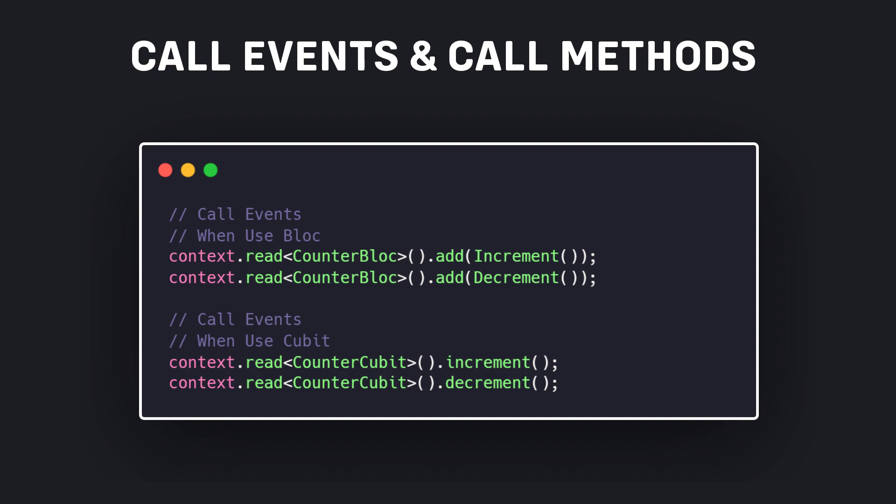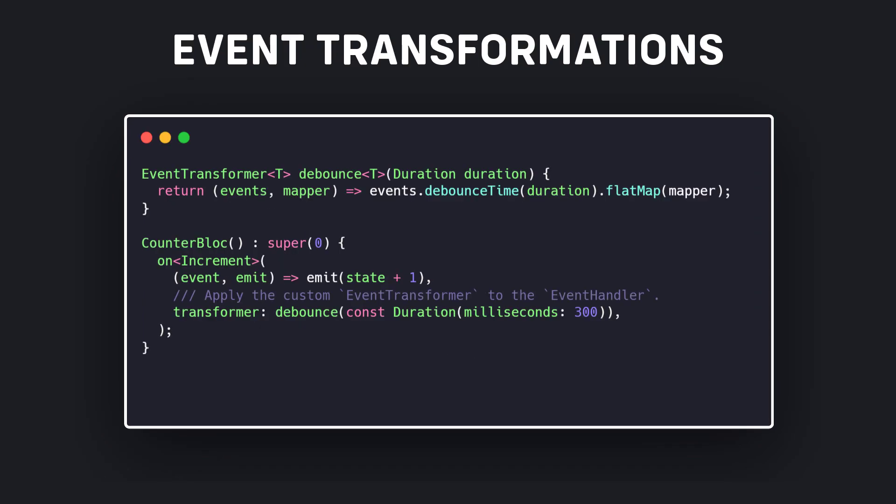However, bloc has an advantage that we don't have in cubit: advanced event transformations. Bloc has an event stream that allows us to control and transform the incoming flow of events. For example, if we were building a real-time search, we would probably want to debounce the requests to the backend to avoid getting rate limited and to cut down on cost. With bloc, we can provide a custom event transform with very little additional code.